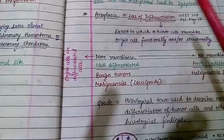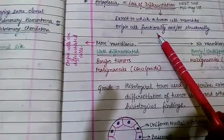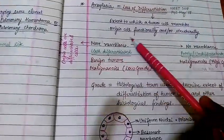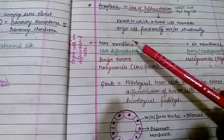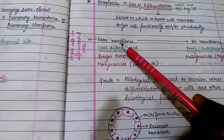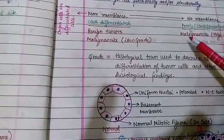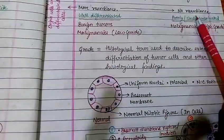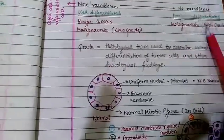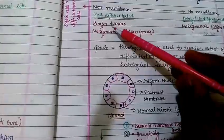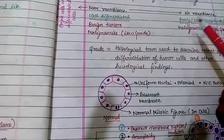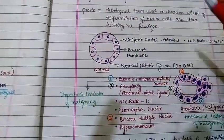Anaplasia is loss of differentiation. Differentiation means the extent to which a tumor cell resembles the original cells functionally and structurally. If there is more resemblance to the original cell, they are well-differentiated. If there is no resemblance, they are undifferentiated. Well-differentiated tumors correspond to benign tumors or low-grade malignancy. Poorly or undifferentiated tumors correspond to high-grade malignancy.